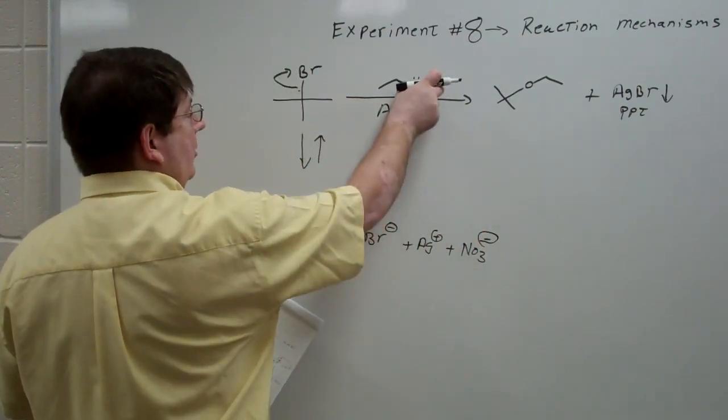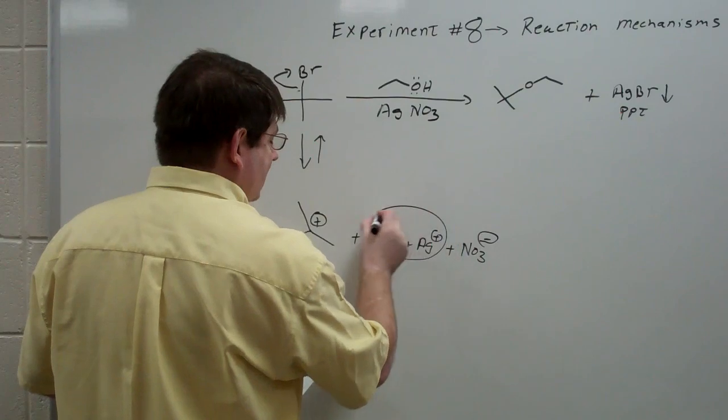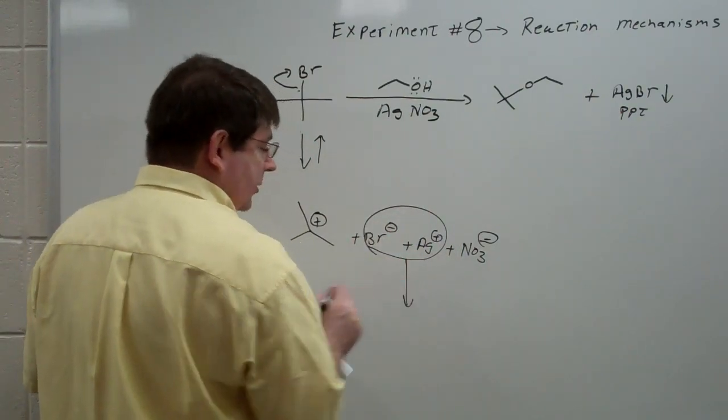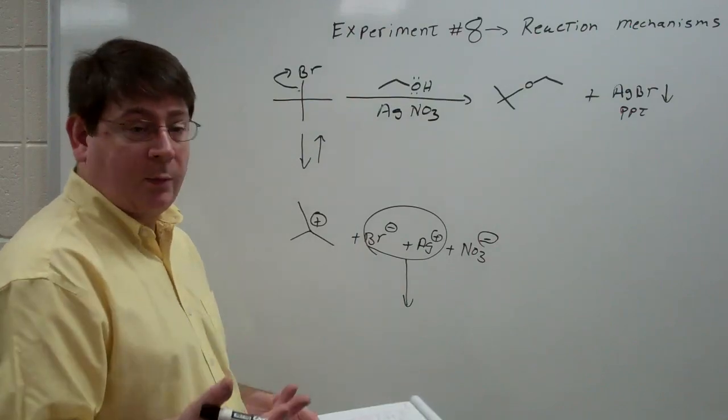And silver nitrate is soluble in ethanol. However, silver bromide is not. And so in ethanol, the silver and the bromide come together and precipitate out of solution as a white precipitate.